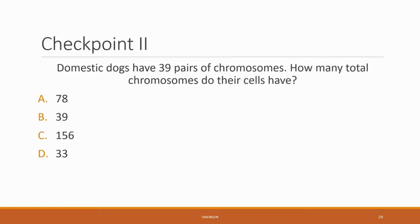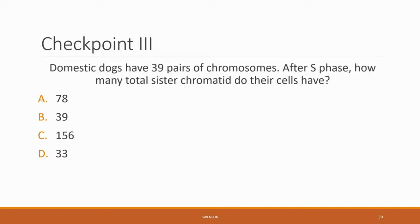Checkpoint two: domestic dogs have 39 pairs of chromosomes — how many total chromosomes do their cells have? Checkpoint three: domestic dogs have 39 pairs of chromosomes — after S phase, how many total sister chromatids do their cells have?